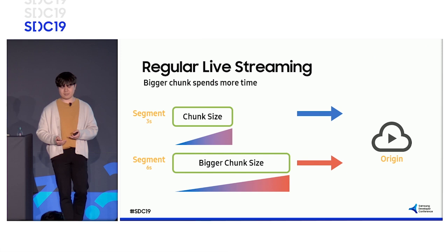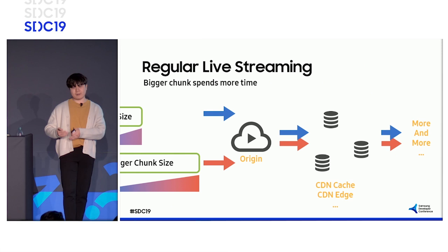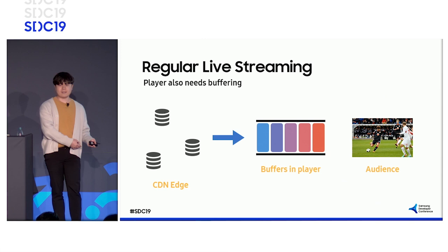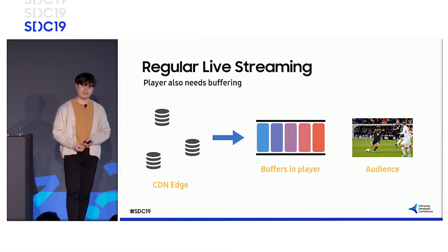Likewise, the time to propagate down to CDN caches from the origin will also be longer. The player buffer size also affects delay. The bigger the player buffer, the more time is needed to fill it, and it is related to the network condition as well.